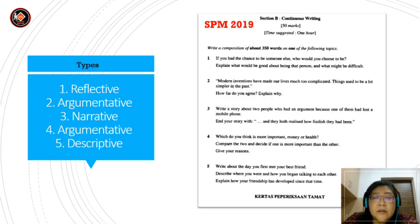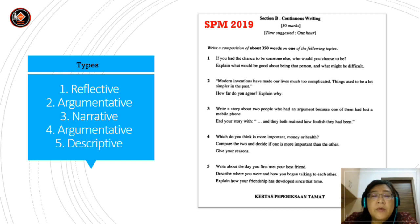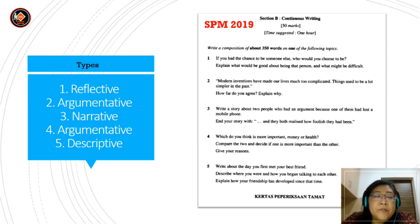To understand the questions or topics better, let's look at the question for SPN in the year 2019. Number one: write a composition of about 350 words on one of the following topics. If you had the chance to be someone else, who would you choose to be? Explain what would be good about being that person and what might be difficult. So this is reflective.